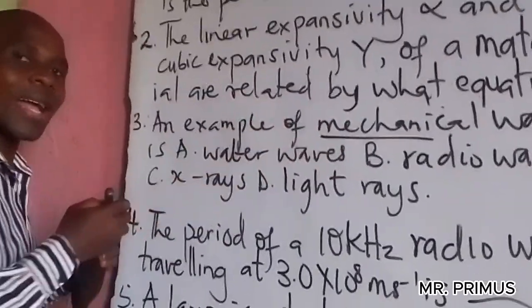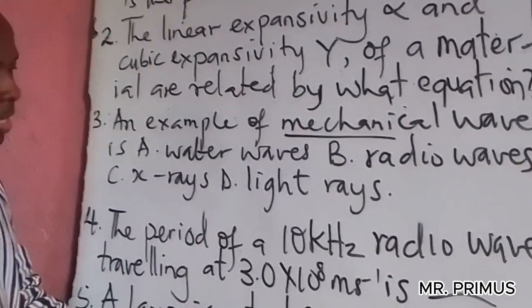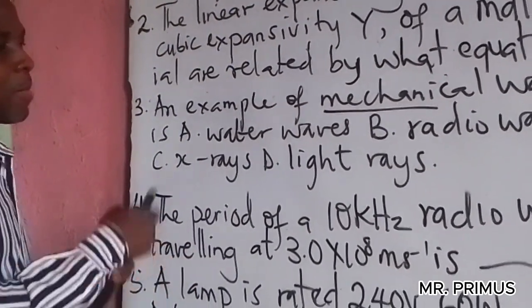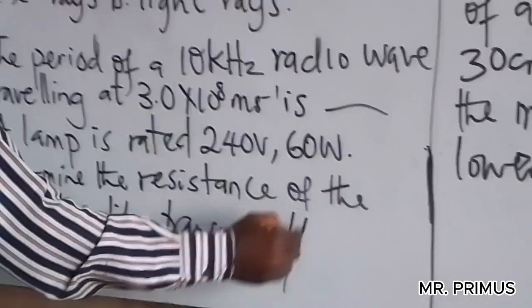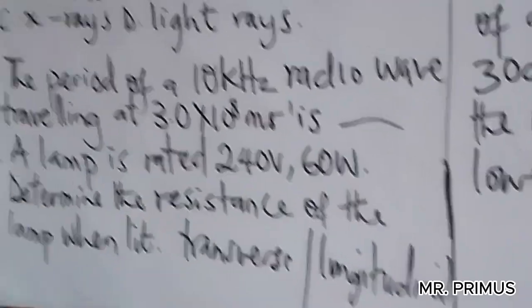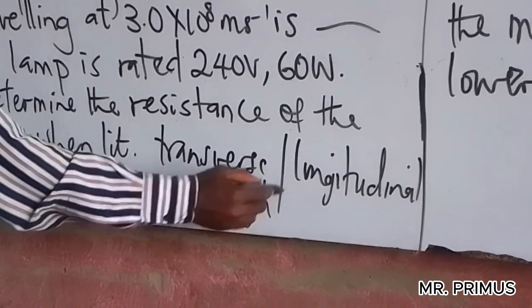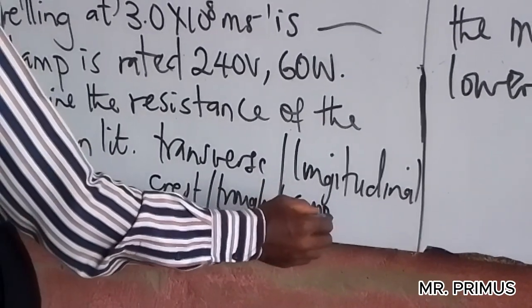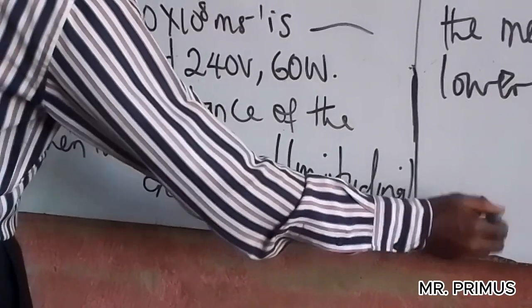A mechanical wave can be transverse or longitudinal — that is your assignment, the first assignment. The transverse wave has crests and troughs, forming a wavelet pattern. The longitudinal wave has compression and rarefaction. We don't have enough space on the board today so we are managing.